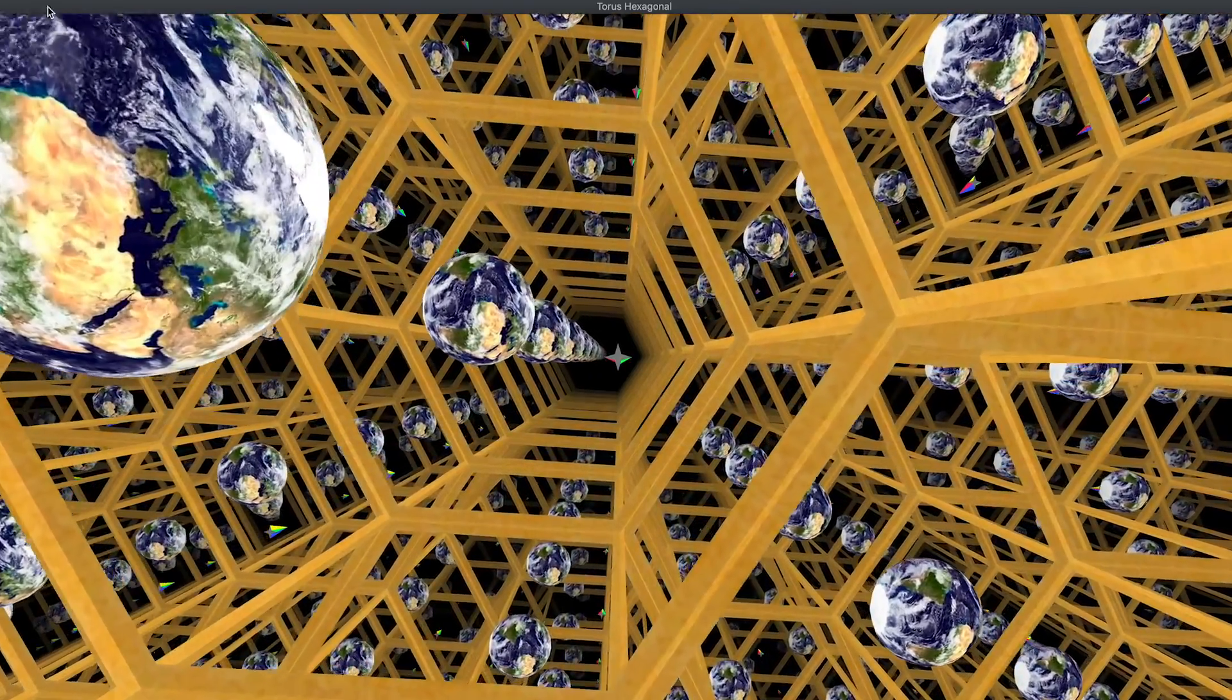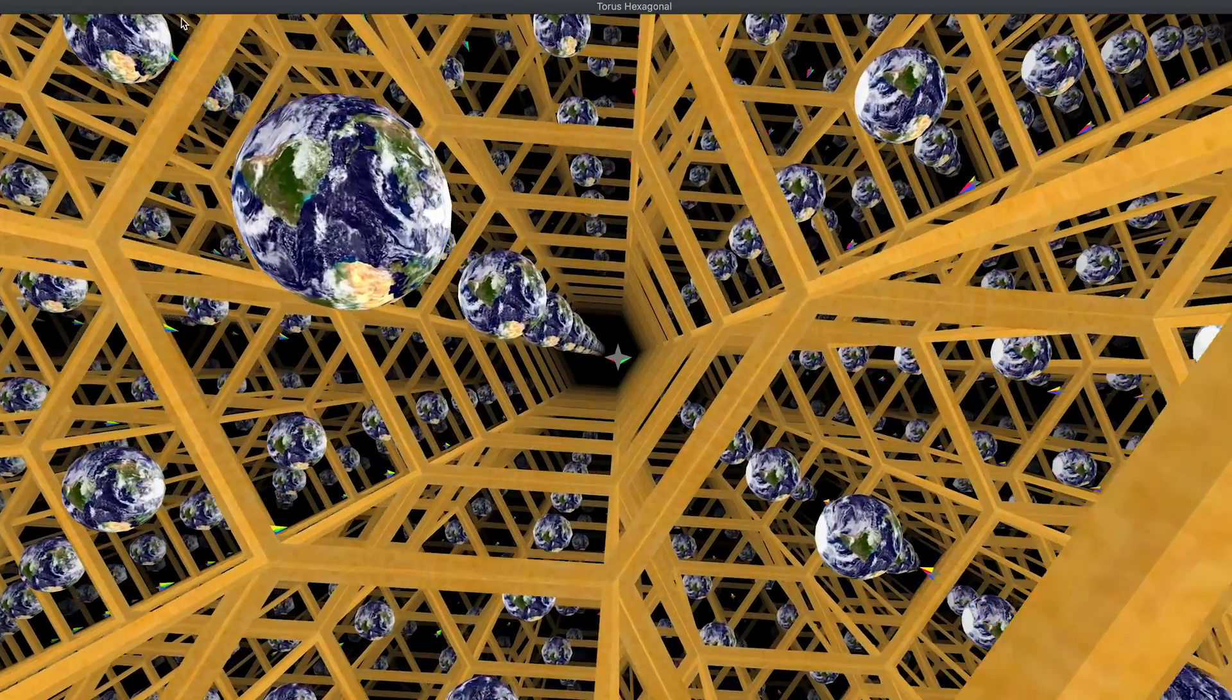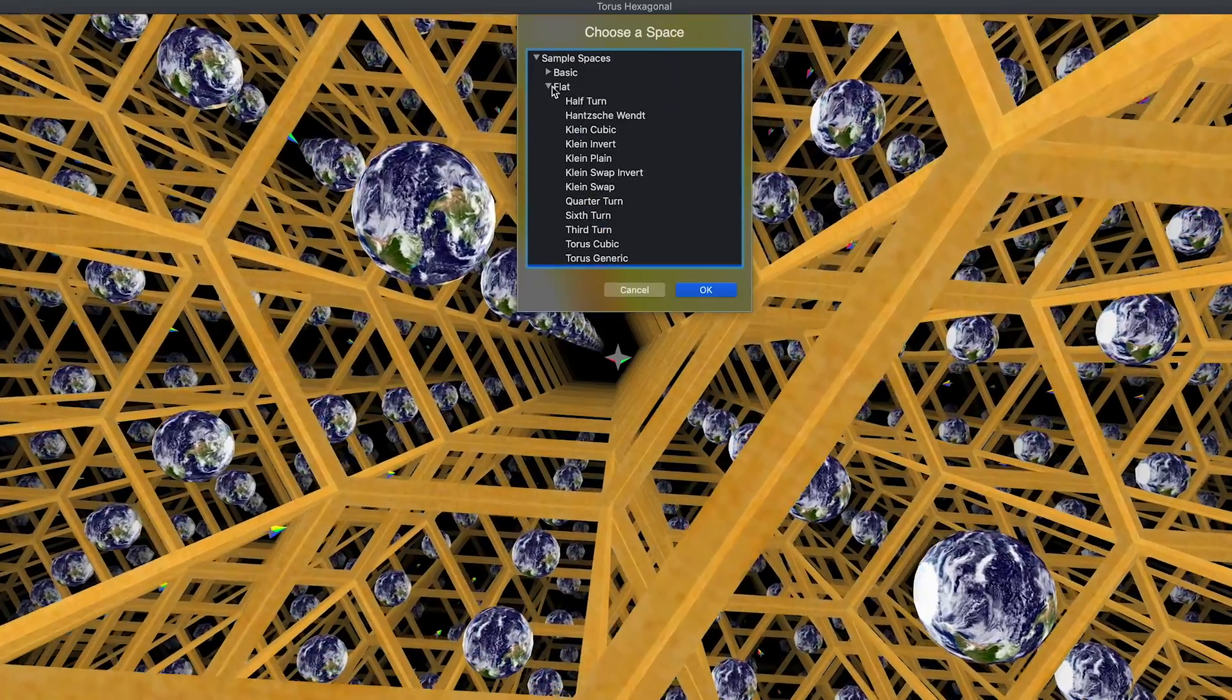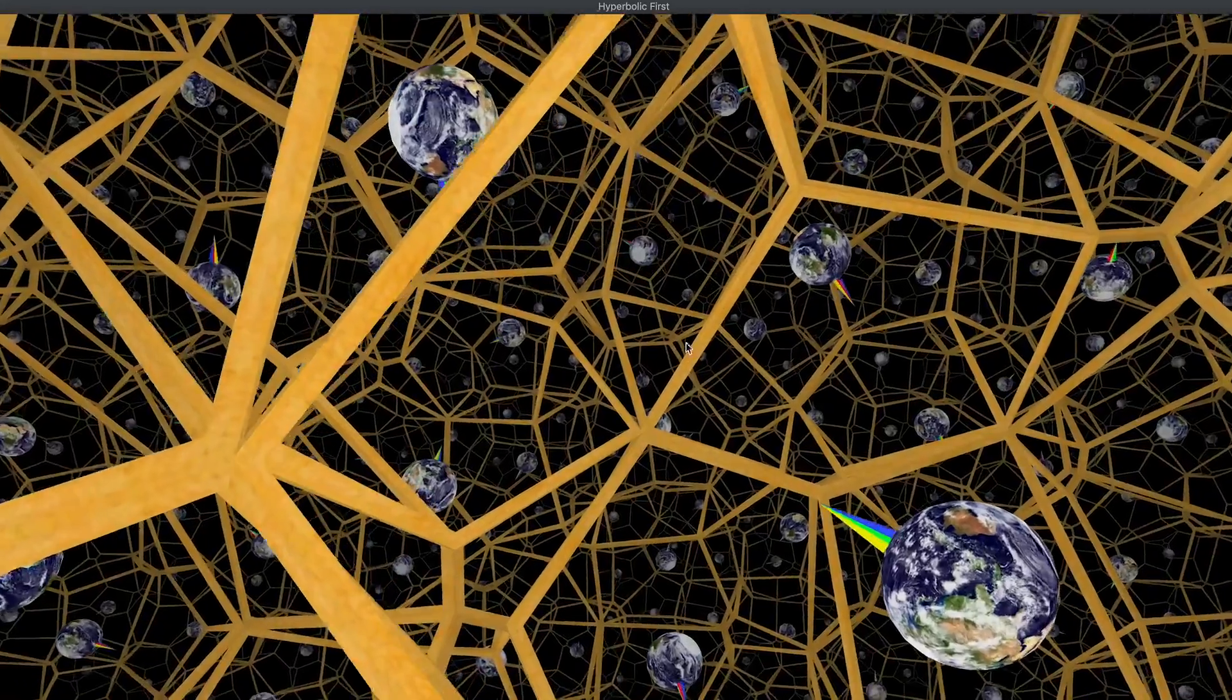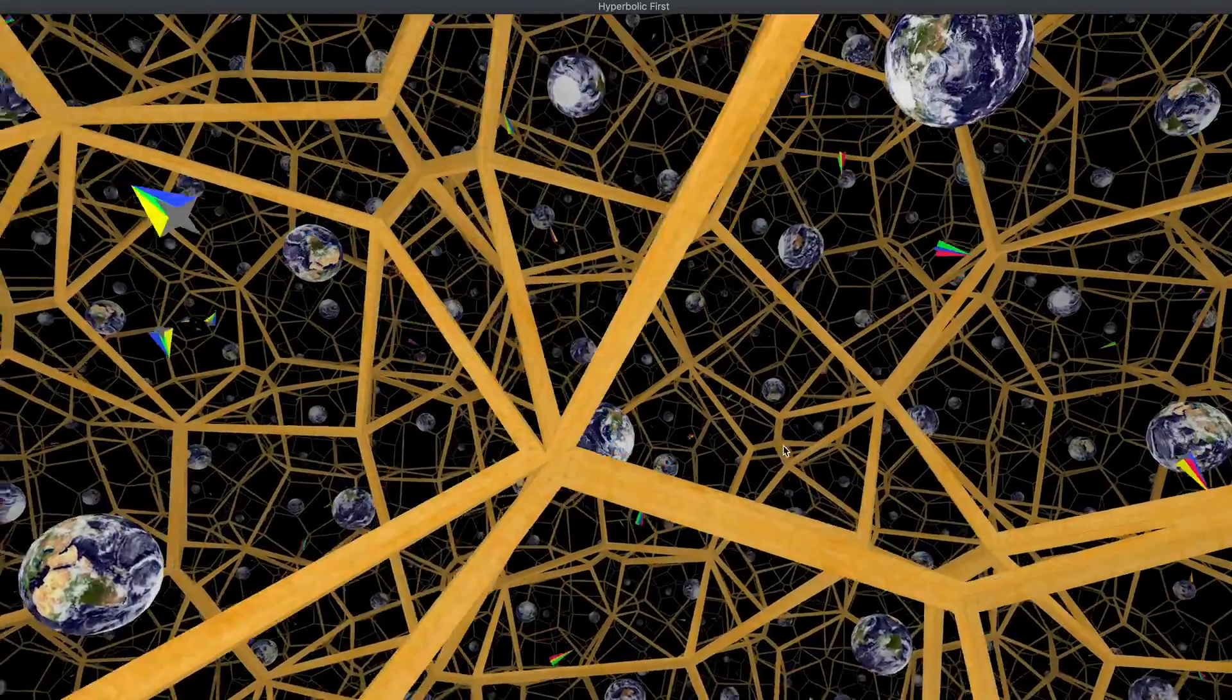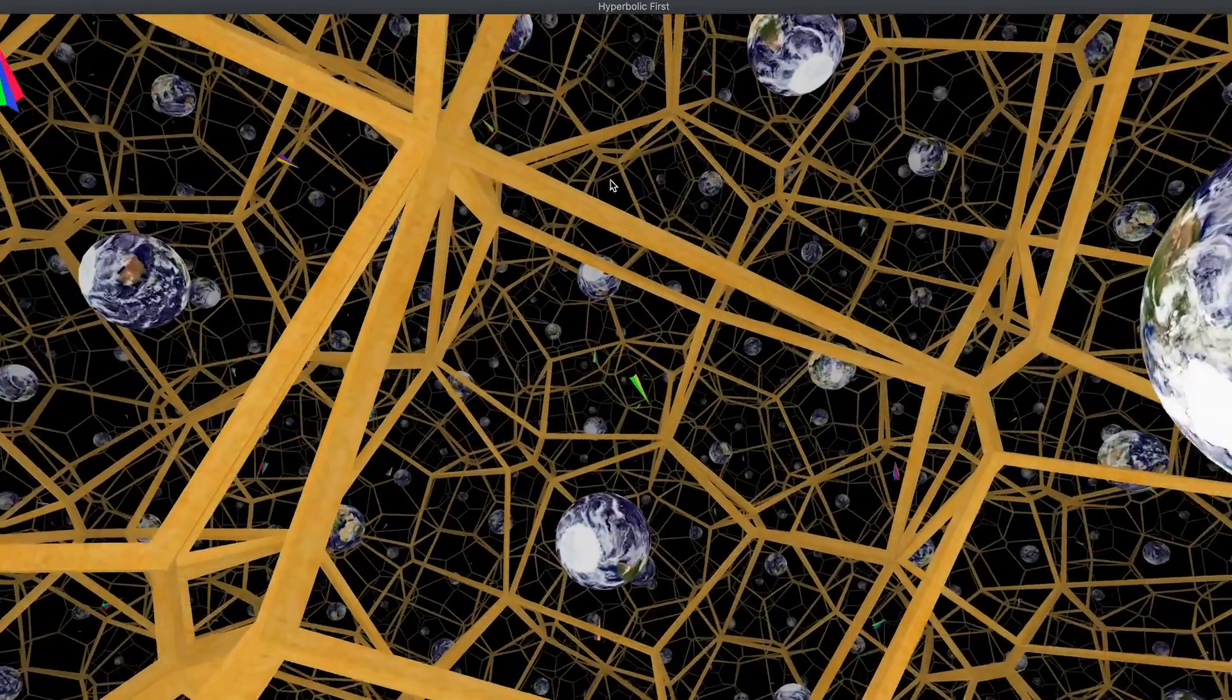Now, if the universe isn't flat, well, that opens us up to hyperbolic or spherical possibilities, which are even weirder. Definitely would need to be their own separate video, but worth showing real quick. Here's one example of a hyperbolic universe, where parallel beams of light would diverge from one another as they travel through space, and that would make things look very weird.